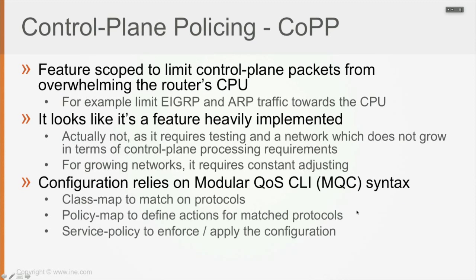The configuration of CoPP is going to rely on what is called MQC — the Modular Quality of Service framework — which means it makes use of class maps to match on protocols like EIGRP or ARP. You then call those class maps within policy maps to define actions for matched protocols — for example, dropping all BGP traffic if BGP isn't used in your network, or limiting the number of OSPF packets per second. The last step is to enforce that action using the service-policy command, which is the same standard MQC syntax used when implementing regular quality of service on IOS devices.